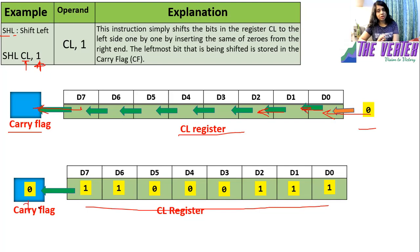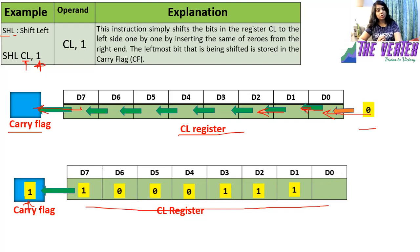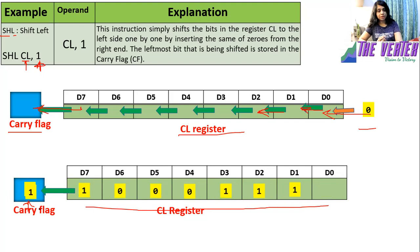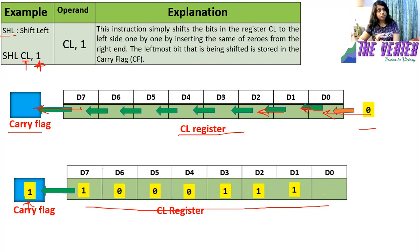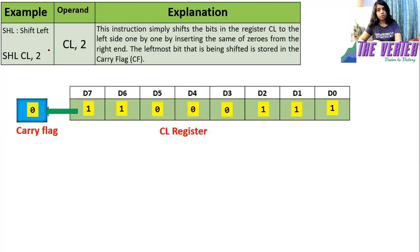Suppose these are the present data available in CL register. After execution, carry flag was zero — now D7 will enter into carry and D6 into D7. Every bit is shifting towards left by one bit position, and D0 is empty, so zero enters at D0. If the count is five, you repeat this five times; if three, repeat three times.